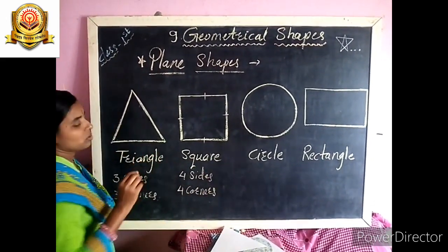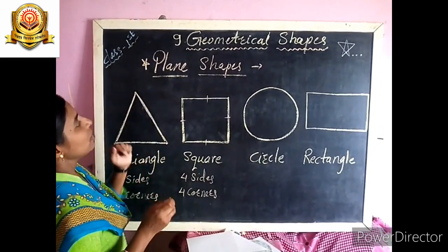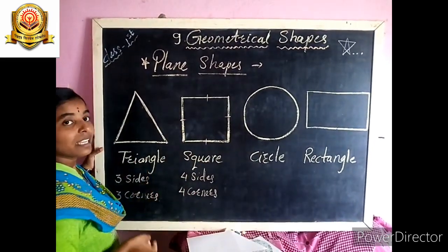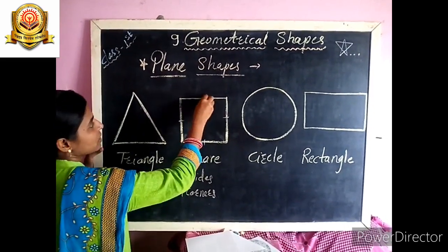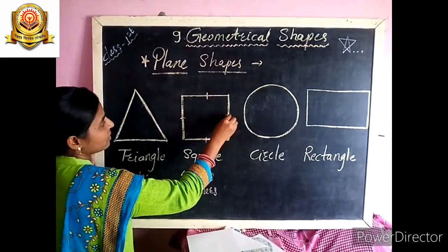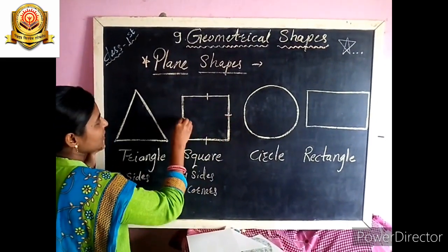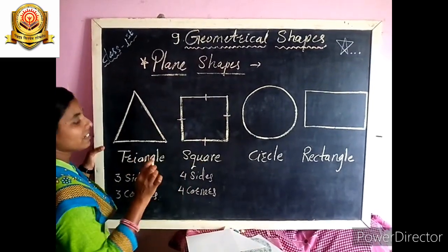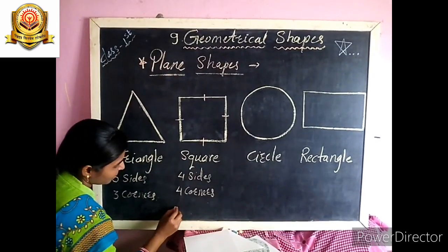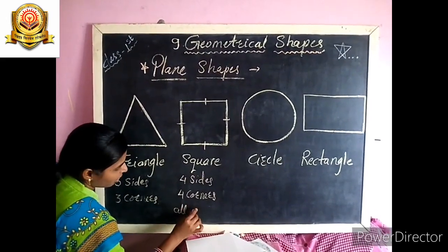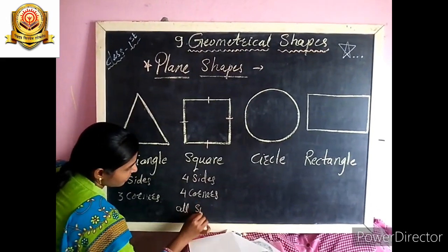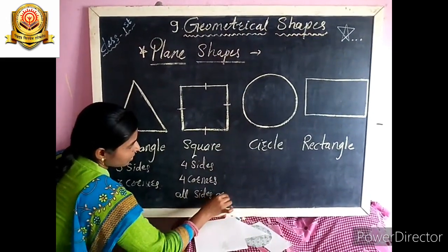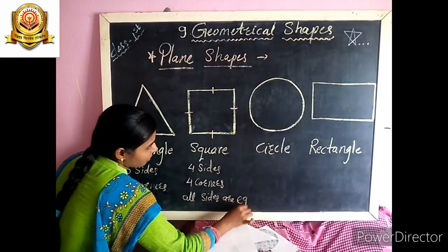And students, this square — all the sides of a square are equal in length. This side, this side, this side and this side — all sides are equal in length. Square's all sides are equal.